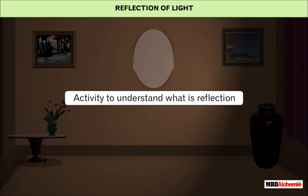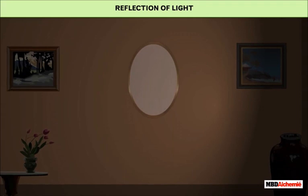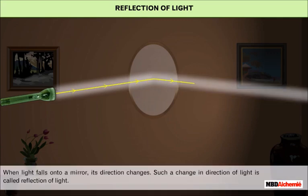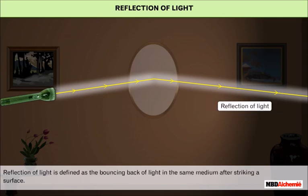Let us do an activity to understand what reflection is. In a dark empty room, from the left shine a flashlight on a mirror. In this case, you will see a bright patch of light on the wall to your right. This means that when light falls onto a mirror, its direction changes. Such a change in direction of light is called reflection of light. Thus, reflection of light is defined as the bouncing back of light in the same medium after striking a surface.